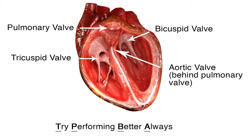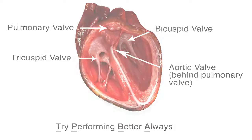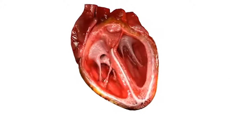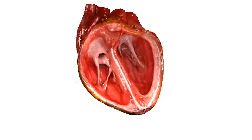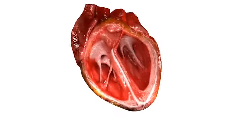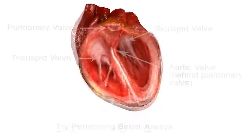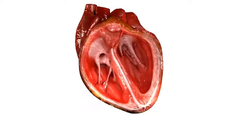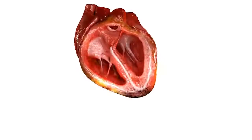As the tricuspid and bicuspid valves snap shut, the pulmonary and aortic valves just opened. The ventricles contract, pumping blood through the pulmonary valve leading to the lungs, and the aortic valve leading to the aorta and the rest of the body. These valves then snap shut, making the second heart sound, S2, or dub in lub-dub.